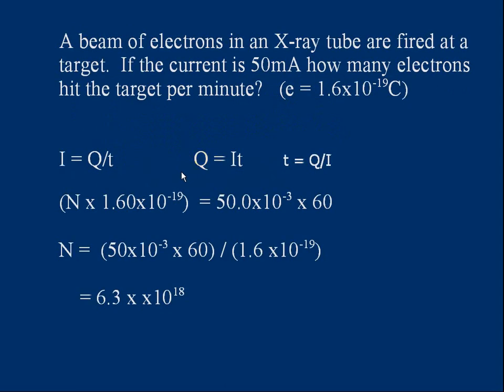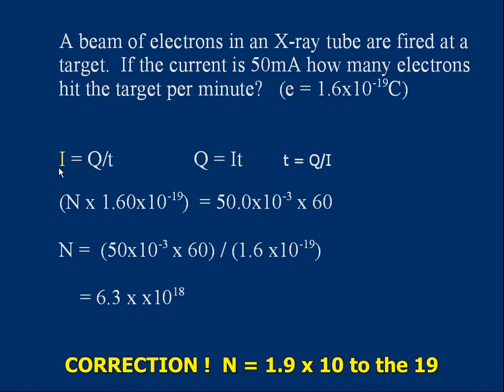Okay, here's my solution. I is Q over T, we know. You could rearrange that. Q equals IT. T is Q over I. We've got to pick one of these which is most convenient. And I'm going to use the middle one, Q equals IT. Do I know what charge is? Well, if we call the number of electrons hitting the target each minute N, I don't know what N is, but let's call it N. That's the answer we're trying to find, the number of electrons per minute. Then we can say, well, the charge hitting the target each minute is N times the elementary charge, 1.6 times 10 to the minus 19.